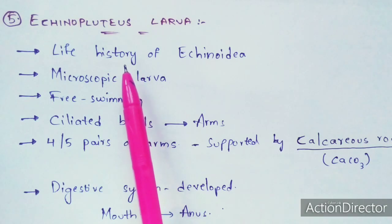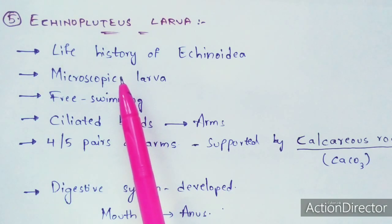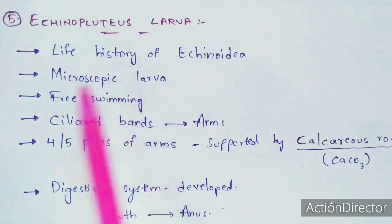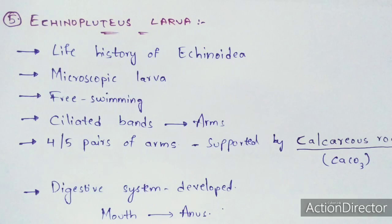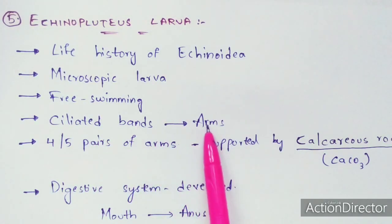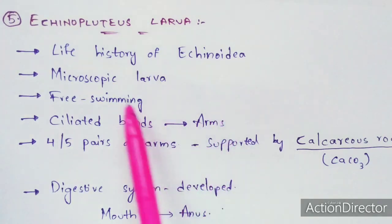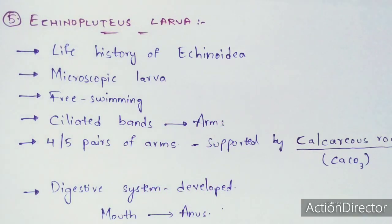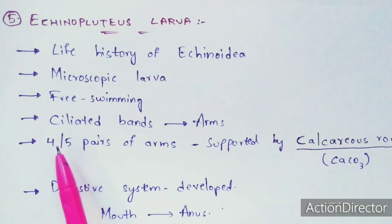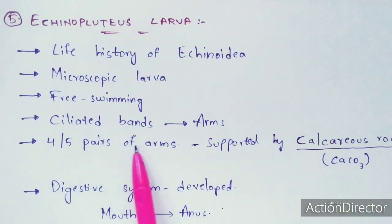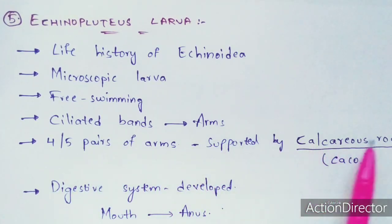The echinopluteus larva is a microscopic larva that cannot be seen with the naked eye — it can only be seen with the help of an electron microscope. It exhibits the property of free swimming. It consists of ciliated bands, which mature and develop to form arms. These arms play a major role in swimming. In fact, in all forms of larvae, the main function of the arms is to perform swimming.